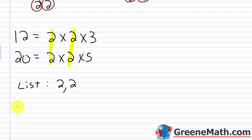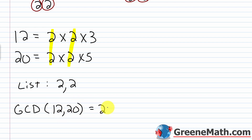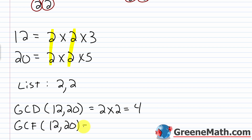So for the greatest common divisor, we form the product of the numbers on the list: 2 times 2, which equals 4. The greatest common divisor of 12 and 20 is 4. I could have just as easily written: greatest common factor of 12 and 20 is 2 times 2, which is 4. Again, these are the exact same thing.